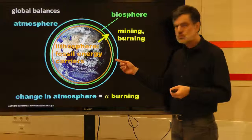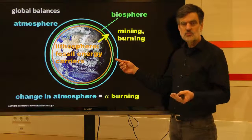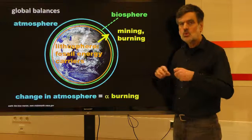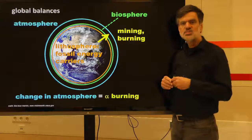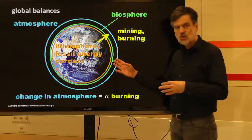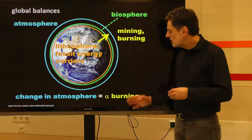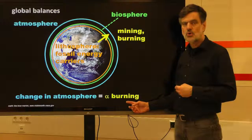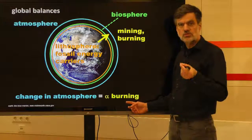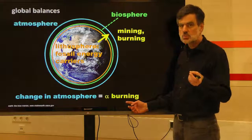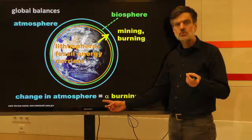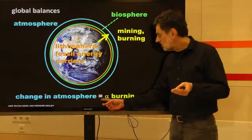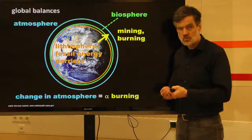Some CO2 is released into the atmosphere because we are mining fossil resources, burning them, and releasing the CO2. How much that is, we actually know, but we don't know all the other things. We can assume that the leaving streams are more or less fractions of what we have been burning. So the remainder released into the atmosphere is some factor alpha of what we have burned — accounting for the fact that something may be taken up by the oceans or plants, so only a certain fraction ultimately winds up in the atmosphere.